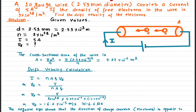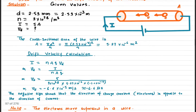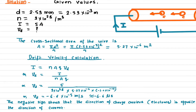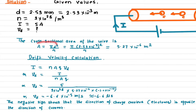Now we need to find the drift velocity. The first thing we have to do is find the cross-sectional area. If the diameter is given, the formula for calculating the cross-sectional area of a cylinder or wire is A = πd² / 4. Plugging in the value of the diameter, we can solve for the cross-sectional area.